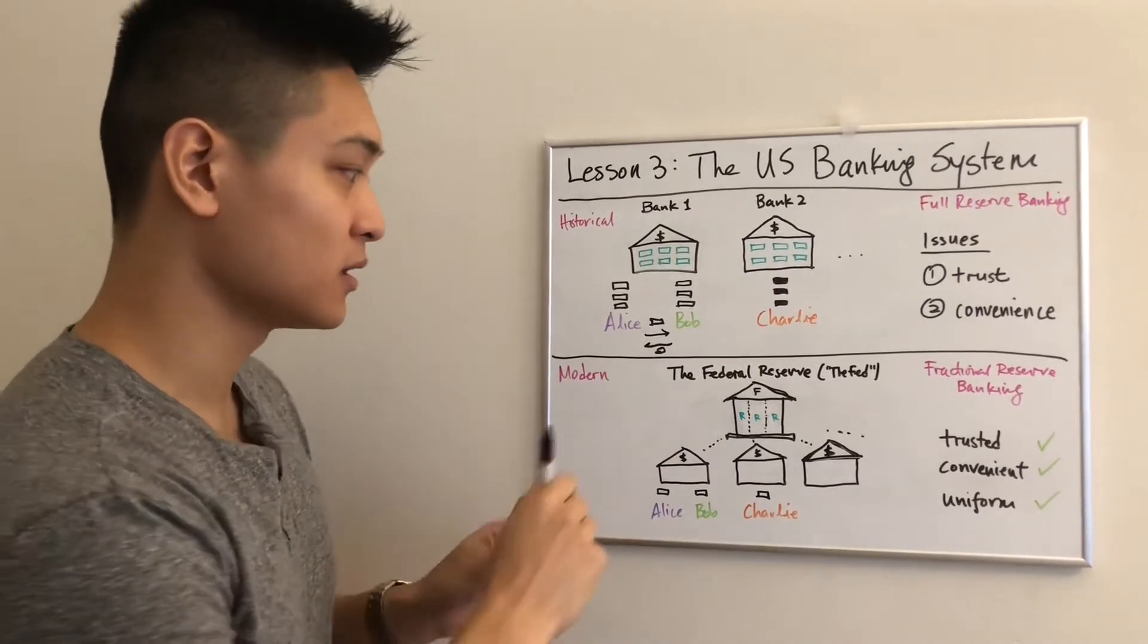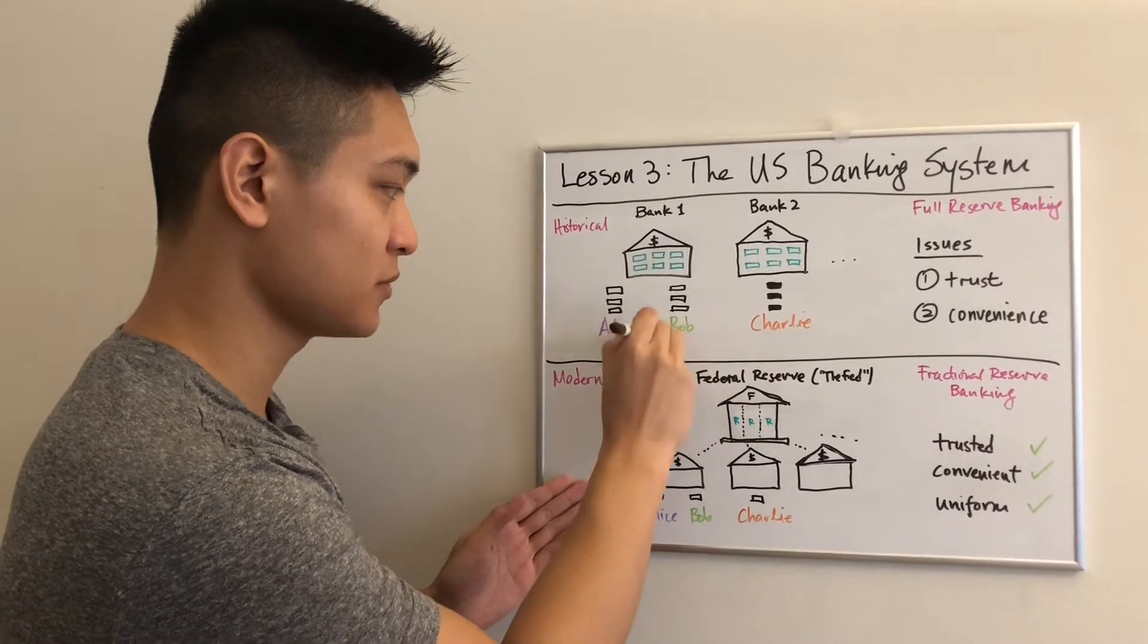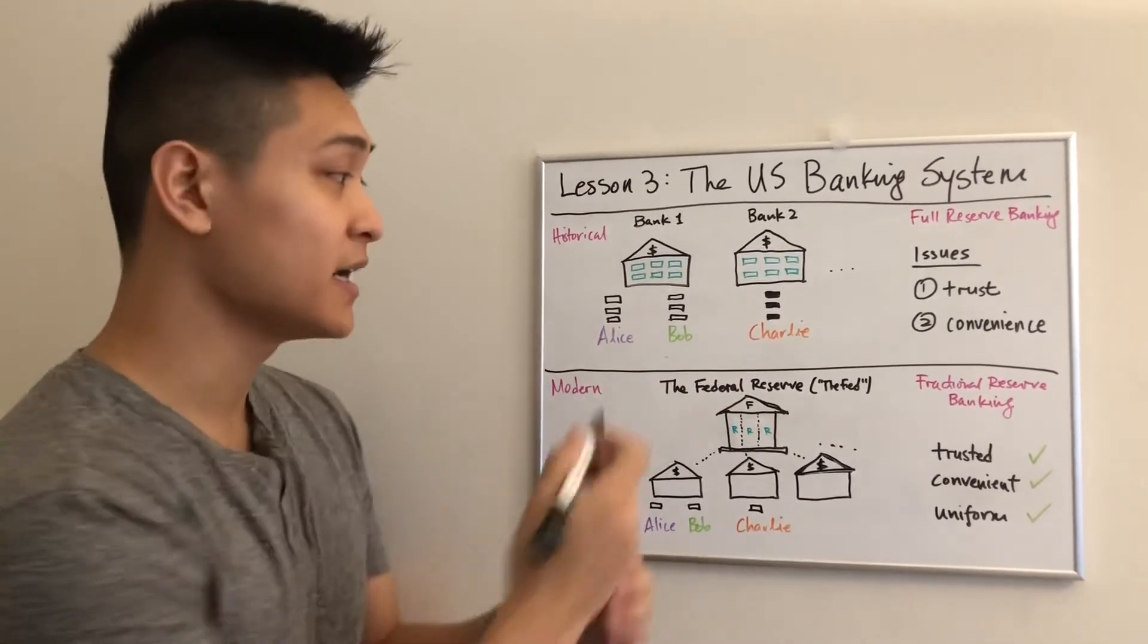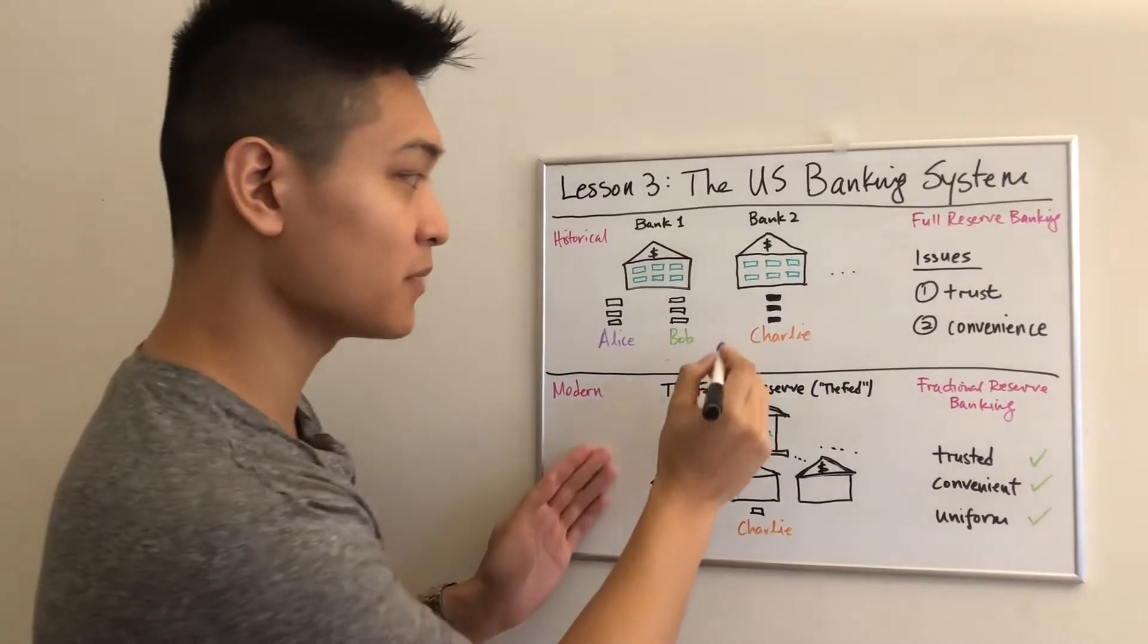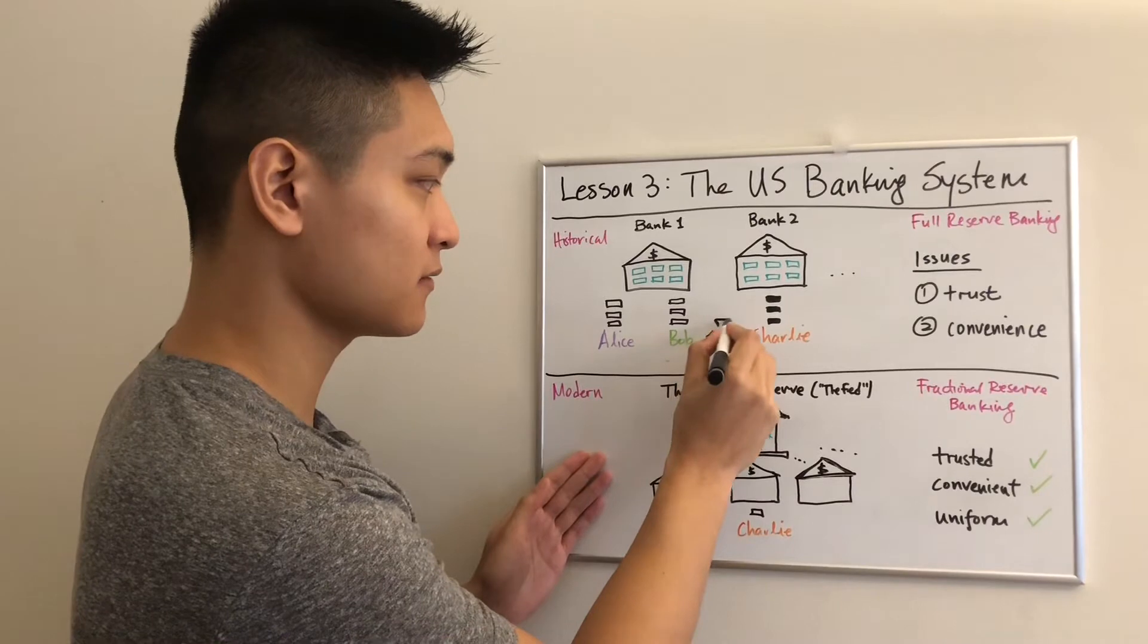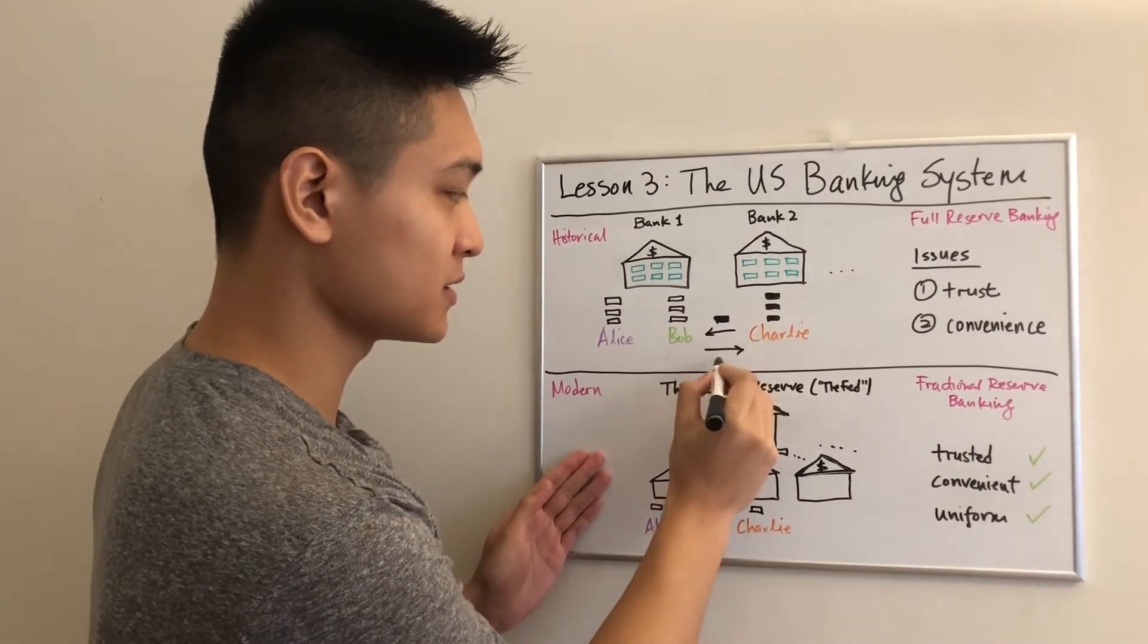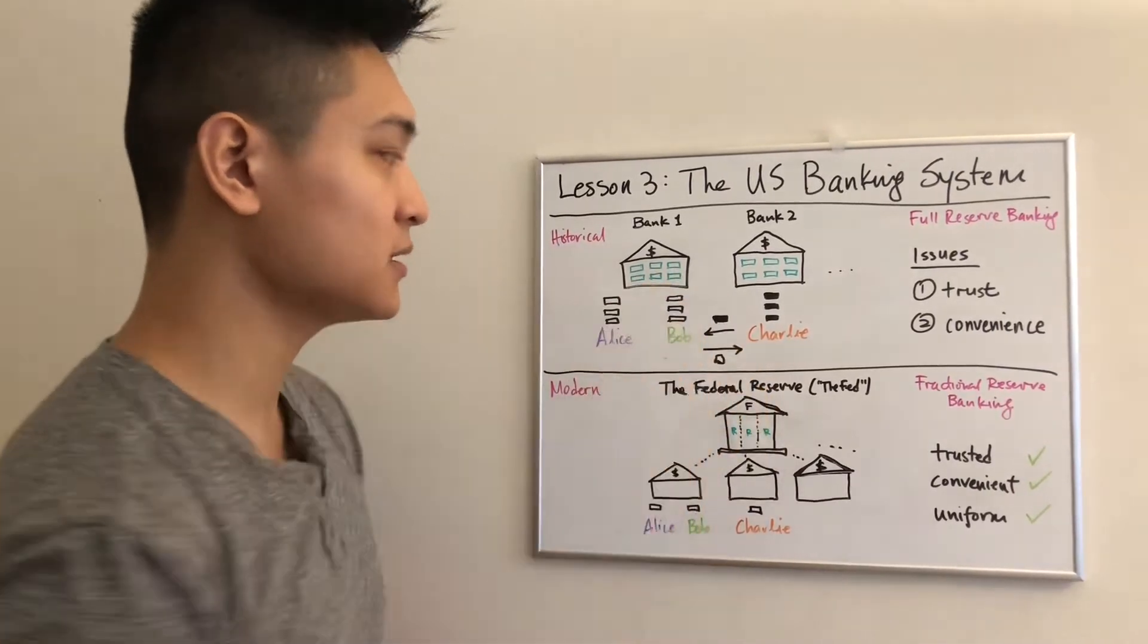Now let's imagine a similar transaction between Bob and Charlie. Charlie is getting pretty hungry and he has his certificates from bank two. He says, Bob, here's your certificate from my bank two, and I would like some bread please. So now Charlie can eat and he's happy.